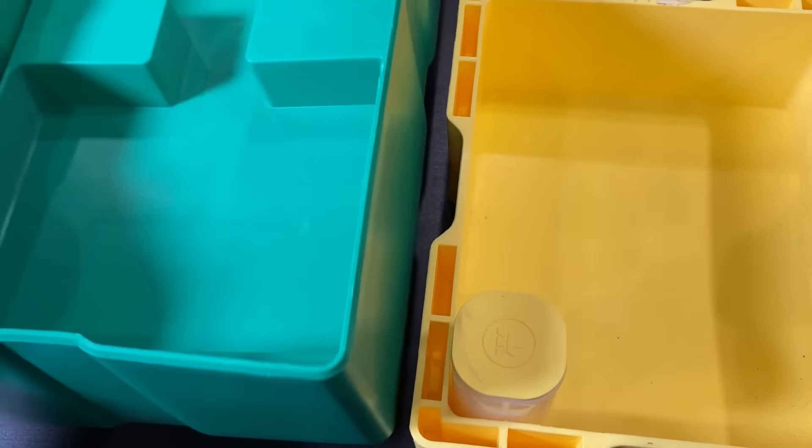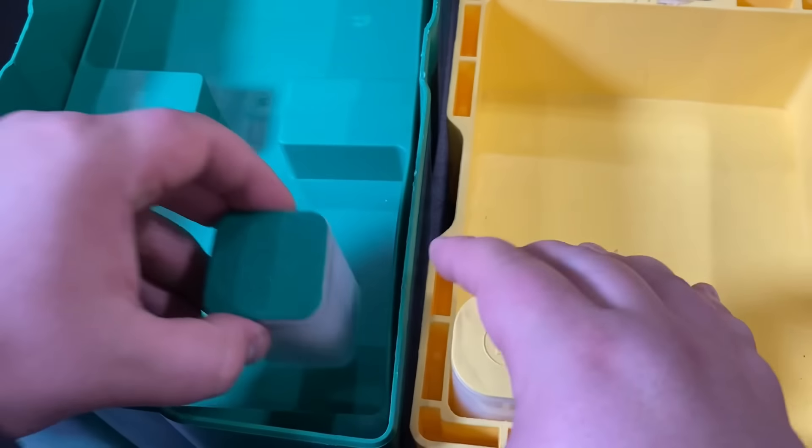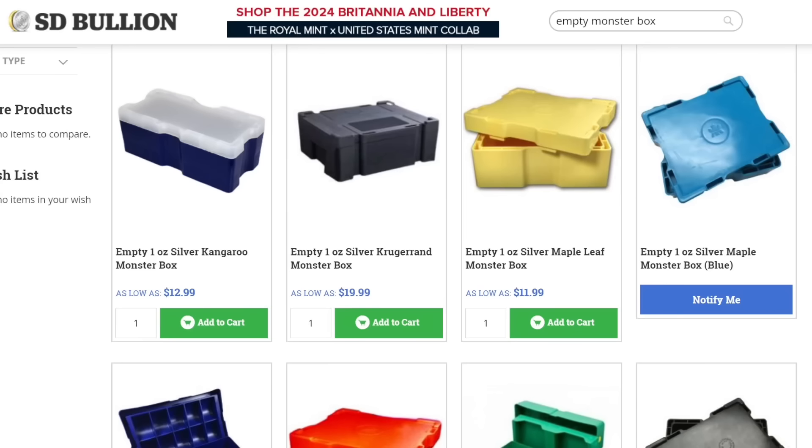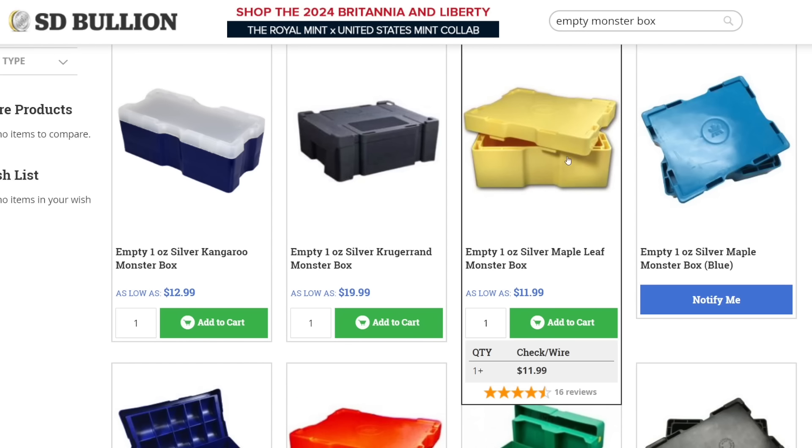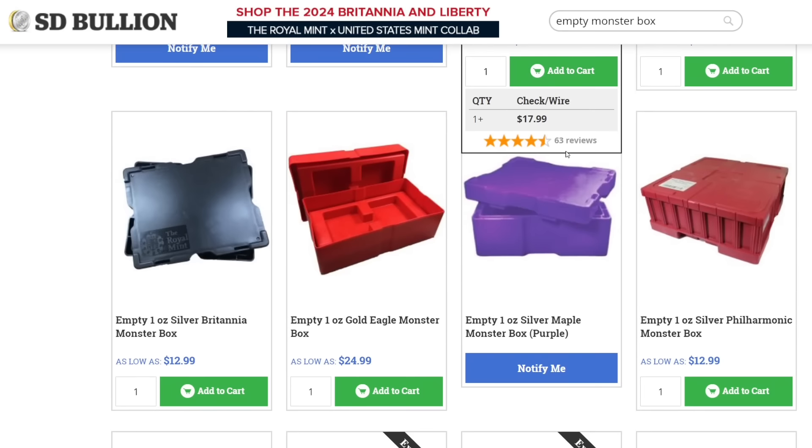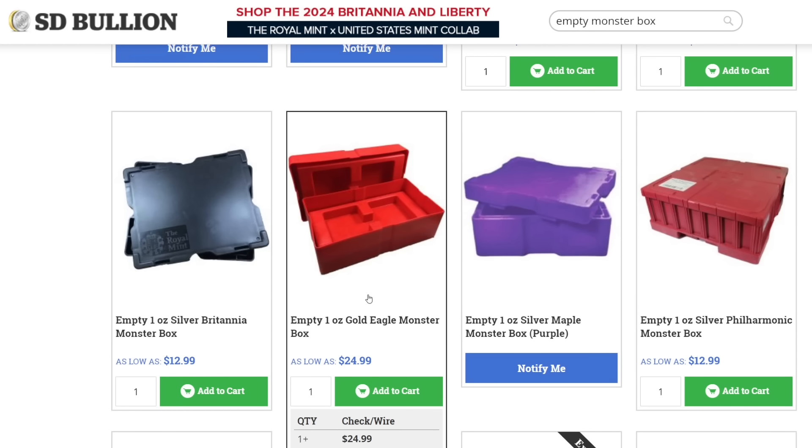If you search 'empty monster box' over at SD Bullion, you can see they have a large variety. Here are the kangaroos, the Krugerrands, these are the Maple Leafs—you can see it's just $12 for this one. They also have the Silver Eagles. They've got Philharmonics, a Gold Eagle monster box that would be really fun to fill, Britannias—you get the picture. There's a large variety of these boxes available.